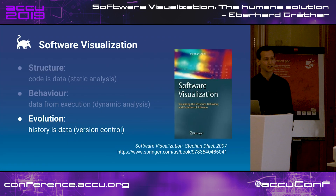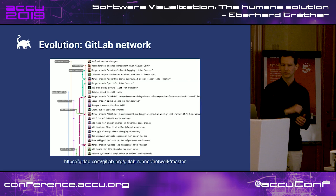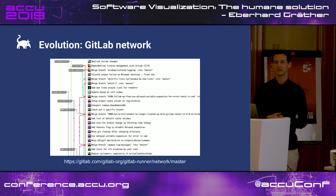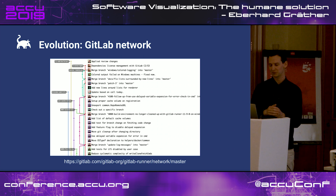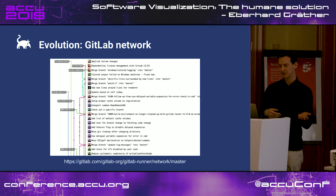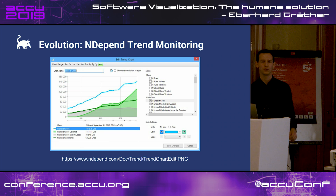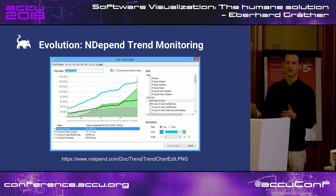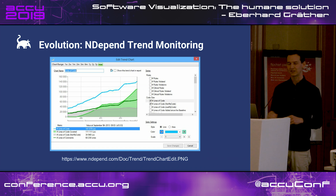Lastly, evolution visualization uses history as data, taken from version control. One common thing you've probably seen is a network graph of Git branches, where vertically you have every commit, and next to it a graph visualization of branches with colors assigned — showing where they split off and where they merge together. Pretty helpful if you have a lot of different branches. You can also just track how single values changed in your code base over time; for example, trend monitoring shows how code base size grew or test coverage changed.